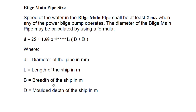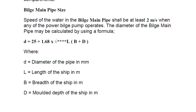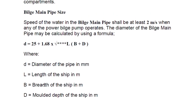Regarding bilge pipe size: the speed of water in the bilge main pipe shall be at least 2 meters per second when any of the power bilge pumps operates. The diameter of the bilge main pipe may be calculated using the formula: D = 25 + 1.68 × √(L × B × D), where D is the diameter of the pipe in mm, L is the length of the ship in meters, B is the breadth in meters, and D is the molded depth in meters.